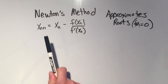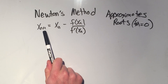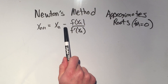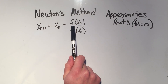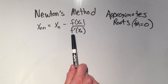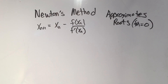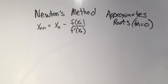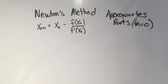Newton's method says x of n+1 equals x of n minus the function evaluated at x_n over the derivative evaluated at x_n. This is a little confusing for sure, but we'll walk through it.